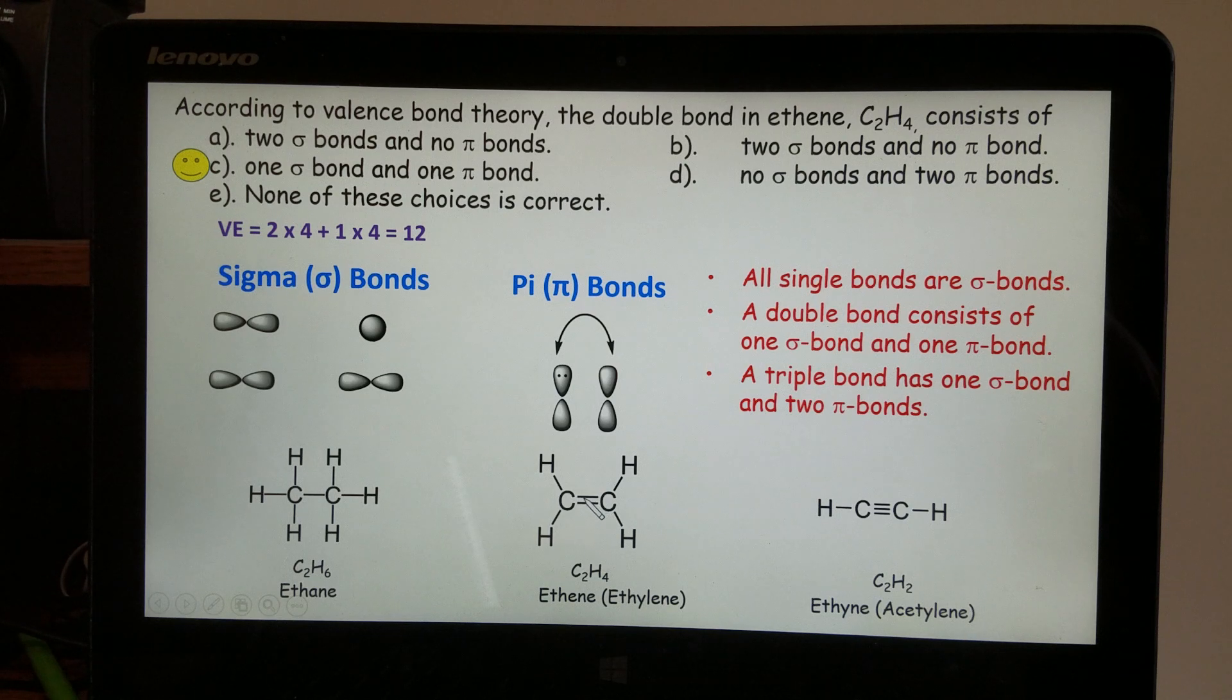And then one more from the double bond, total of five sigma bonds, and then one pi bond.